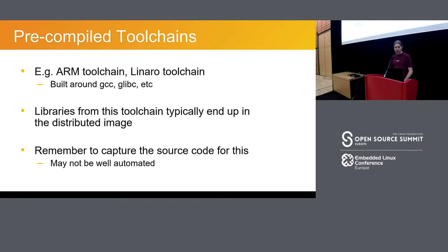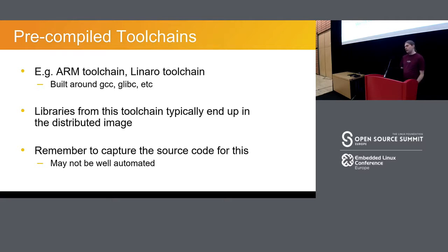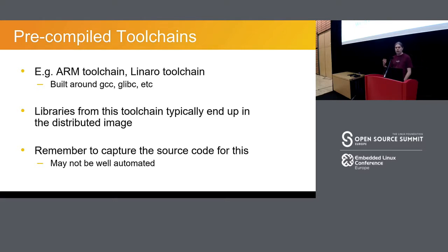Another pitfall where I see things go wrong is when using pre-compiled toolchains, such as the ARM toolchain or the old Linaro toolchain, which is pre-compiled to run on the host to cross-compile for your target. This will typically include GCC — that's only going to run on the host. But it will probably also include a C library that's going to get installed on your target. You do need to capture the source code for this as well, and that might not be an automated process. In the Yocto project case, if you pull in the MetaLinaro layer and enable the external Linaro toolchain, running the archiver to get all the source code is not going to get the source code for the external toolchain.